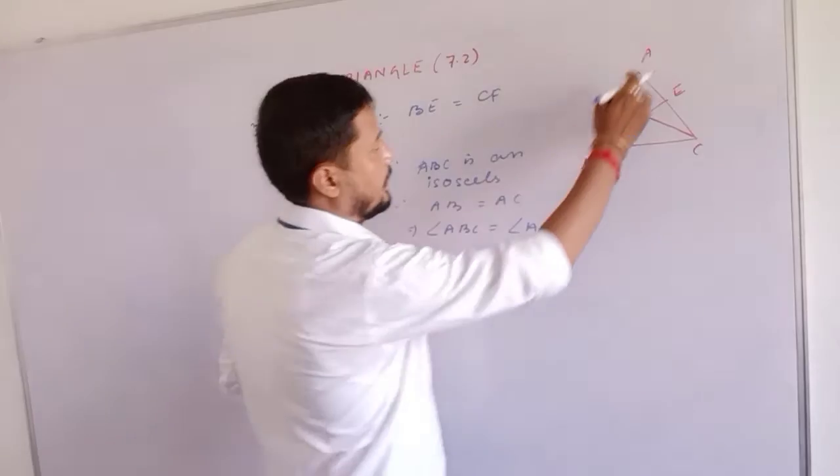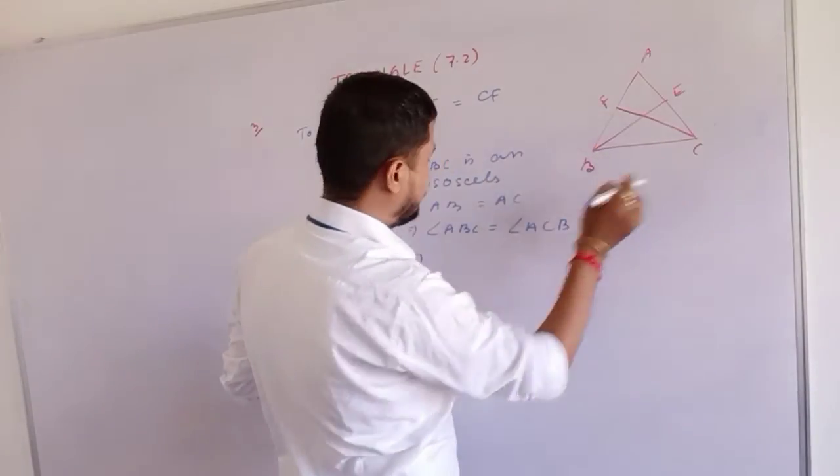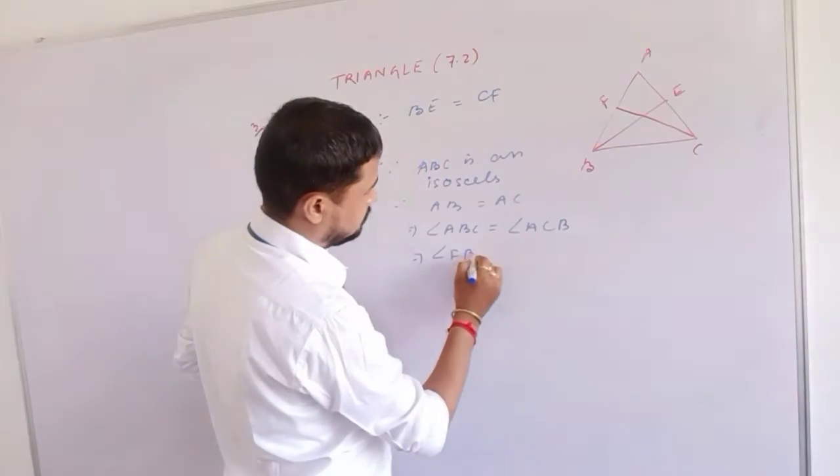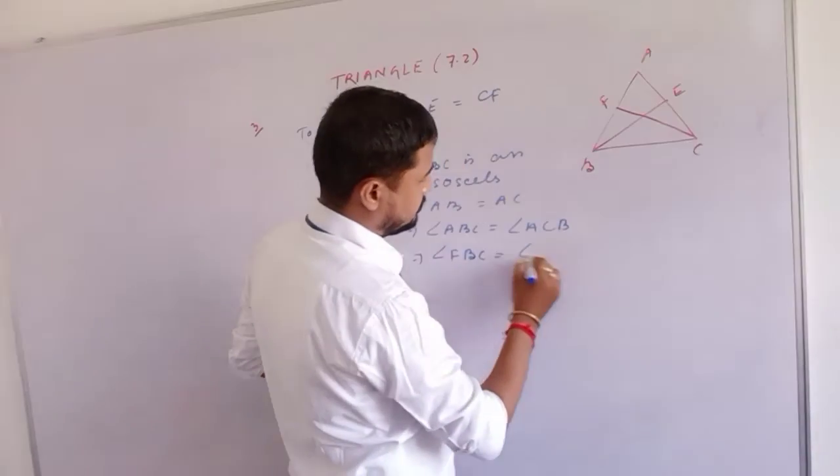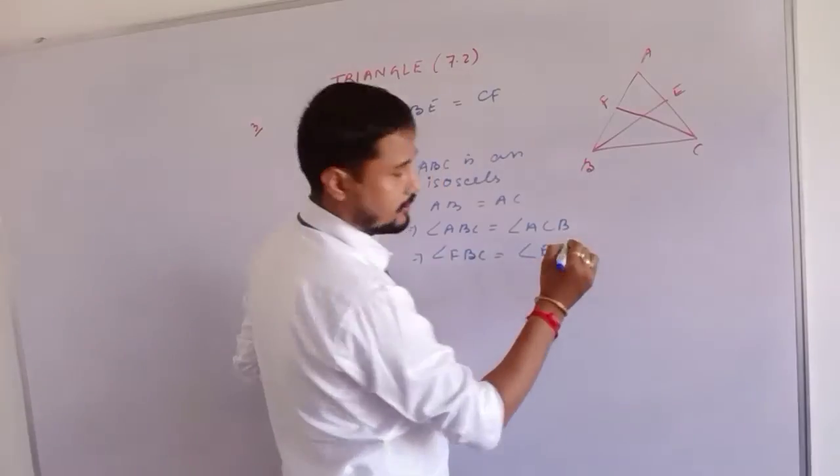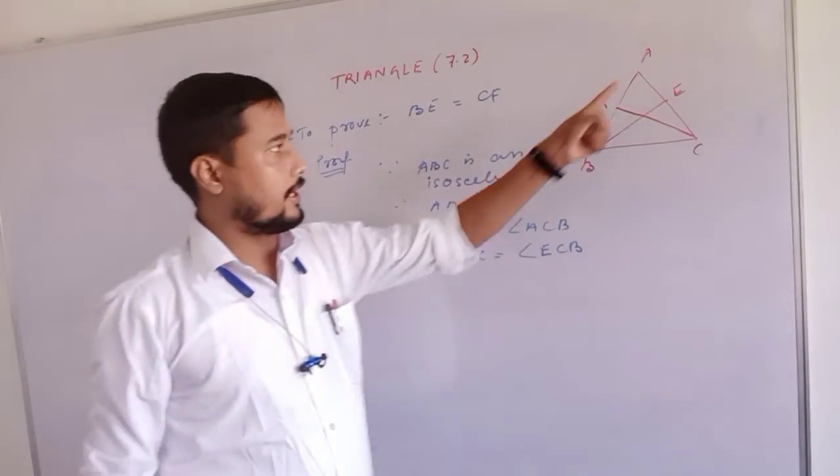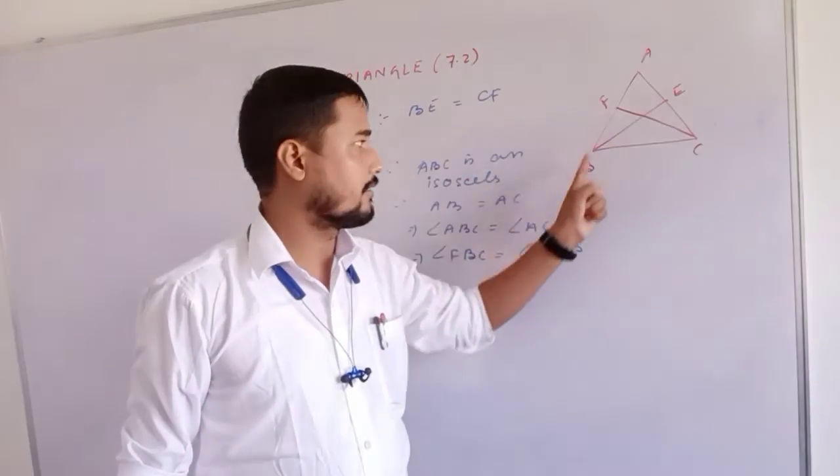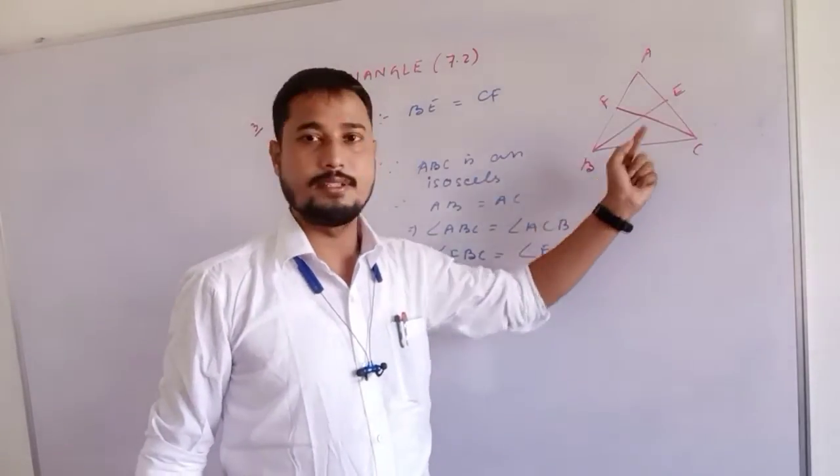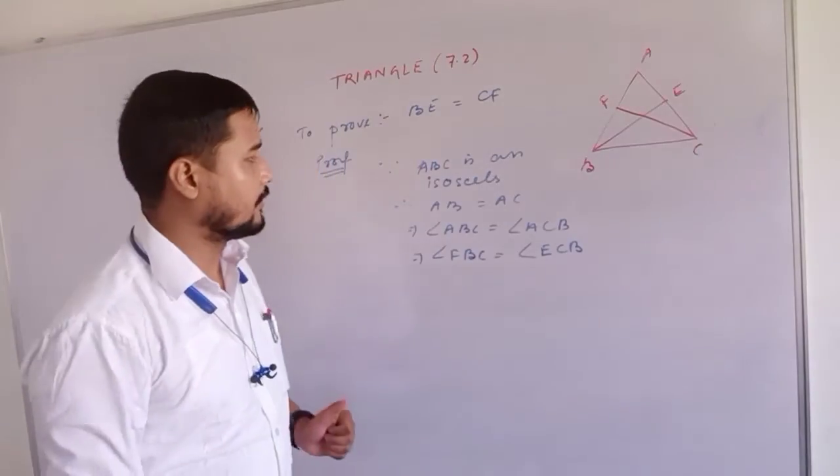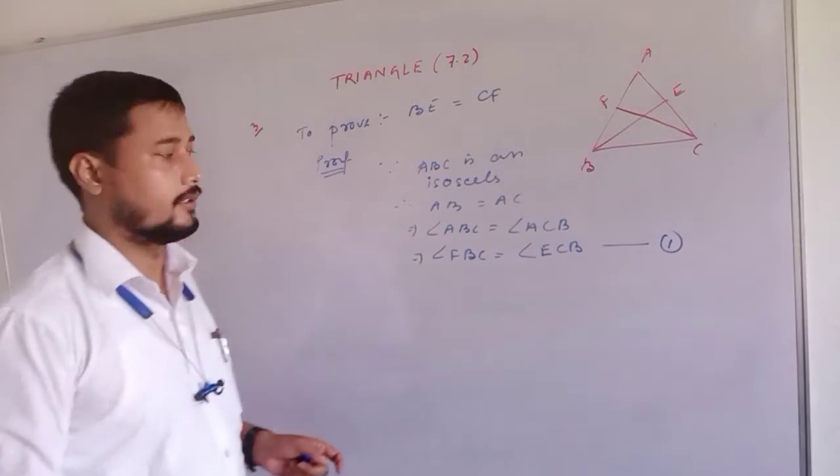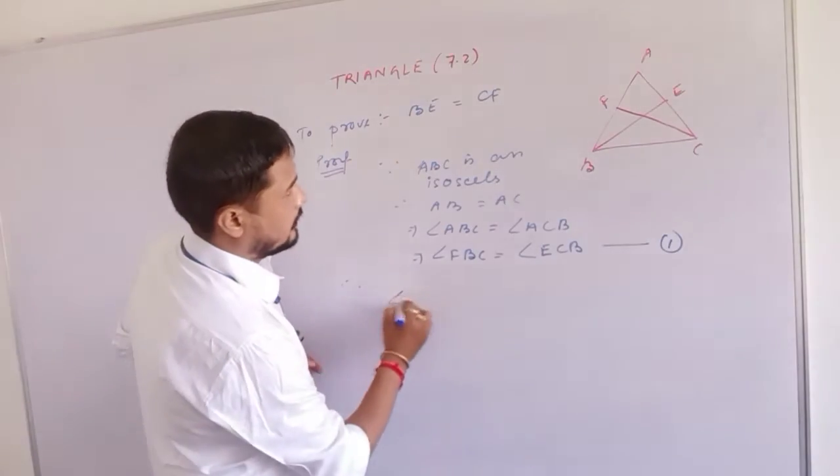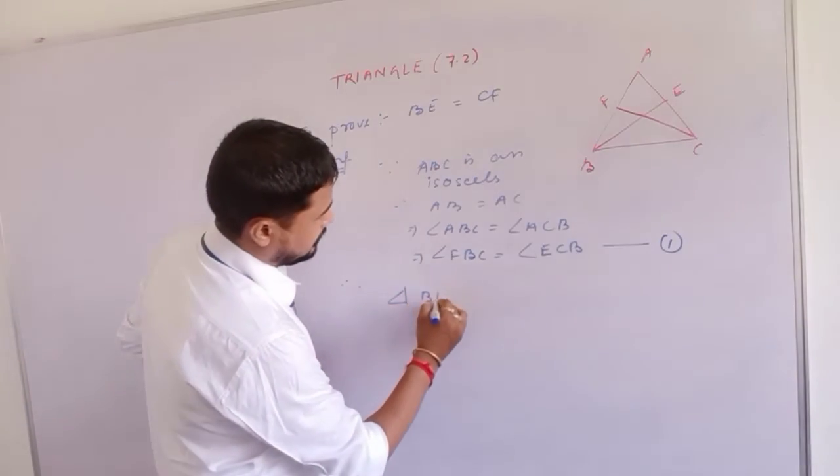If two sides are equal then two angles are equal. Now, angle ABC you can write as FBC, and angle ACB that is ECB. Check it: ABC, you can write FBC. ACB, that is ECB. This is number one. Now triangle BFC.